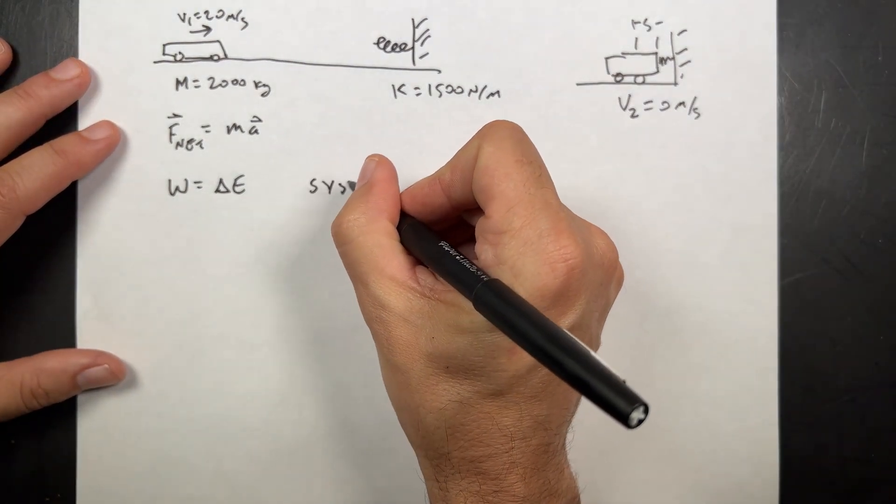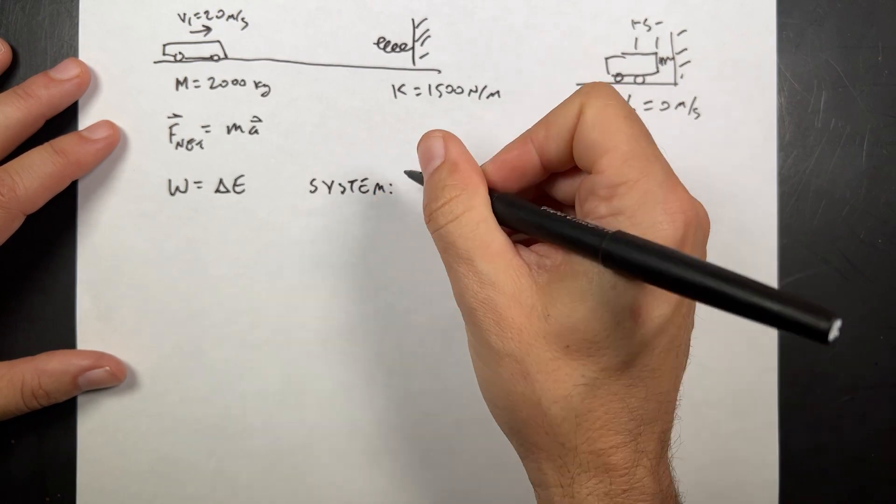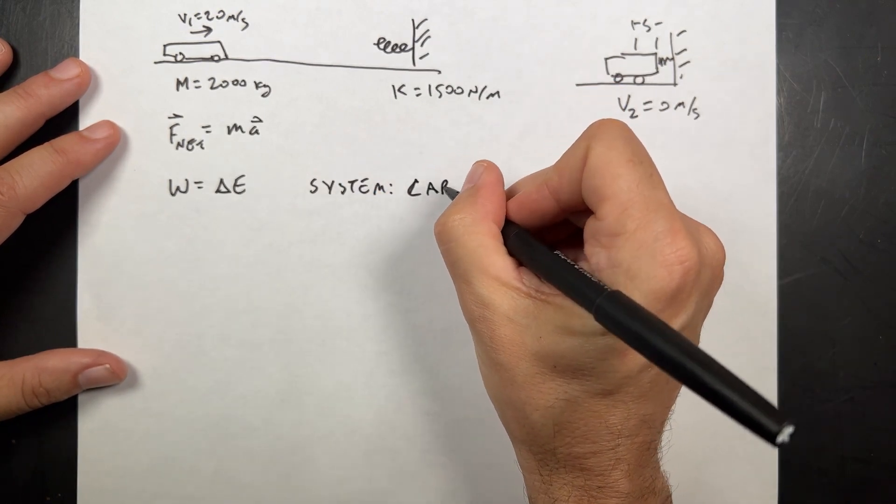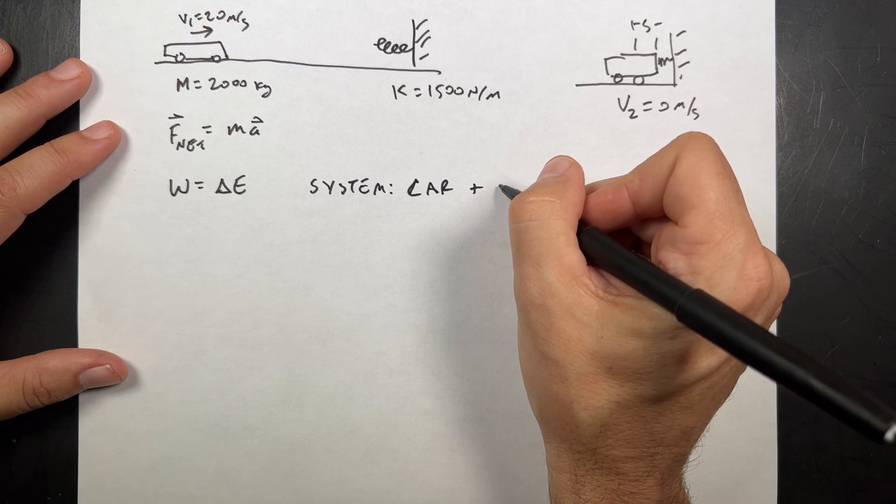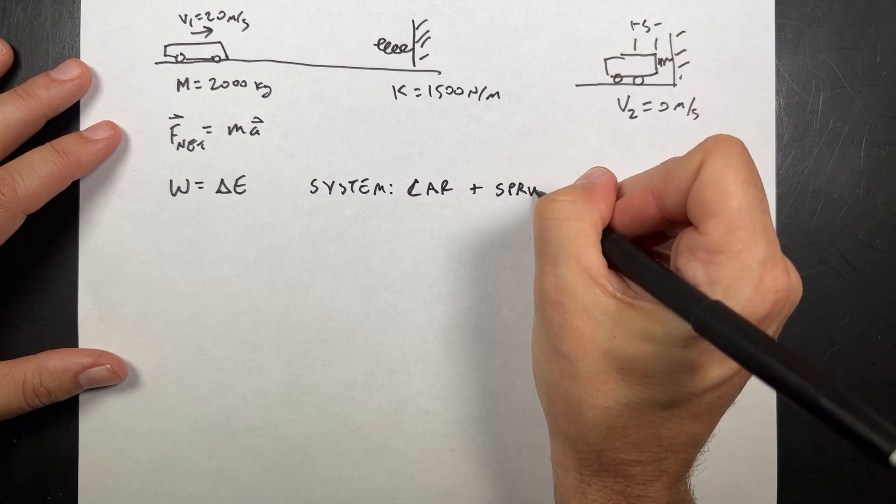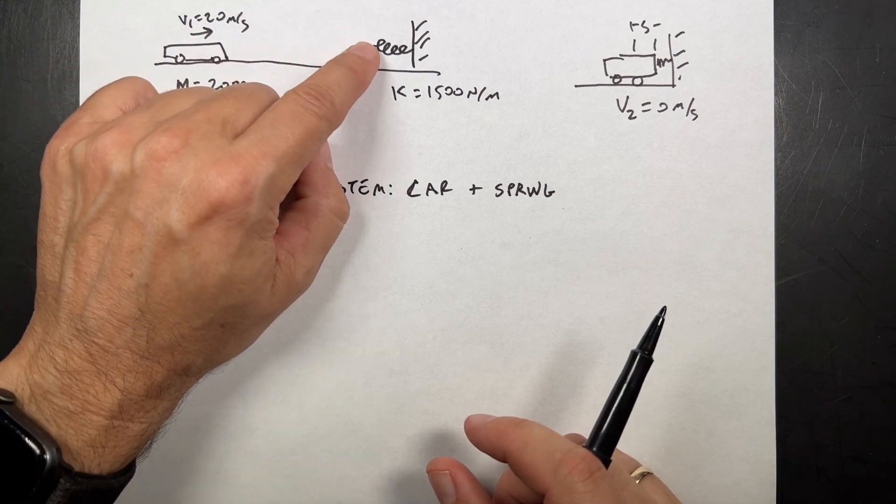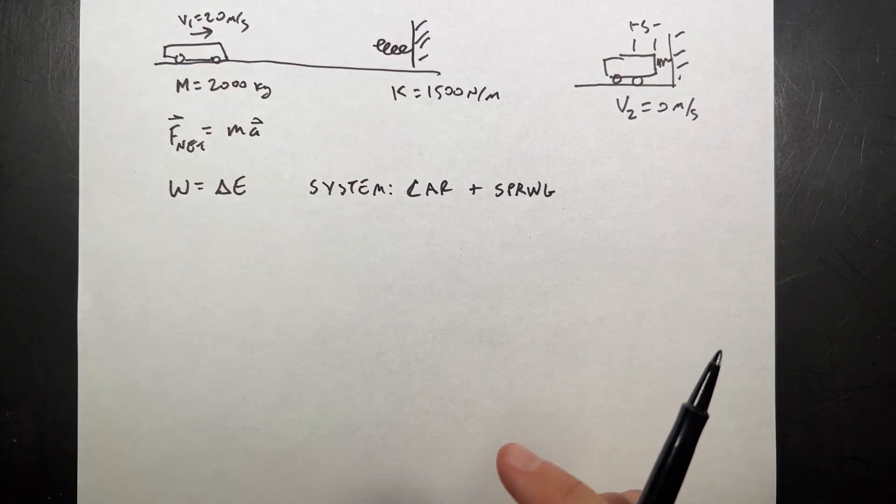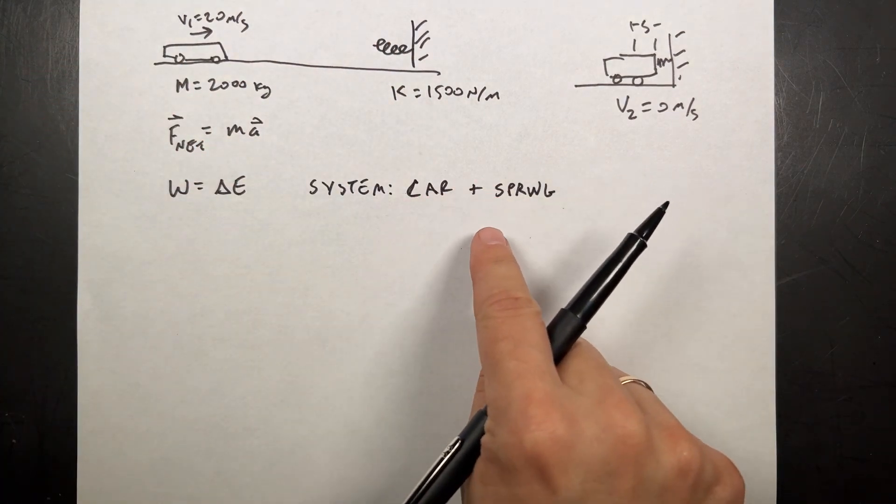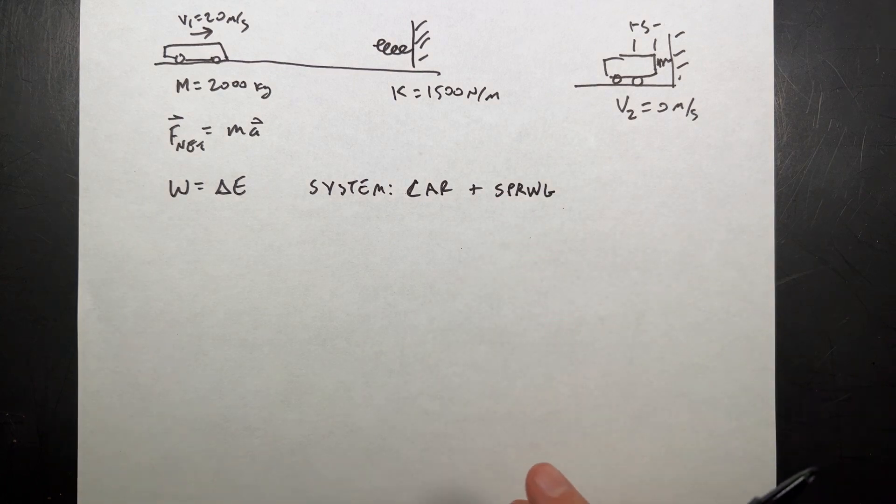So let's say we have a system of the car plus the spring. So as the car moves and collides with the spring, there is a force the spring pushes on the car. But, those both objects are in the system, so there's not going to be any work done by that. Which is really good,